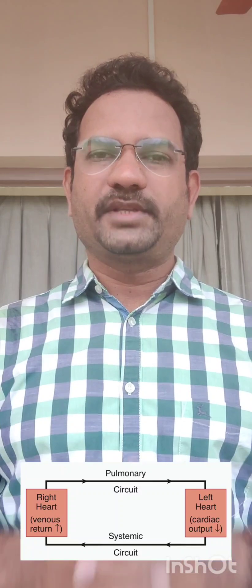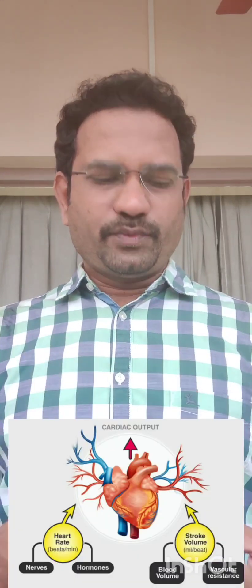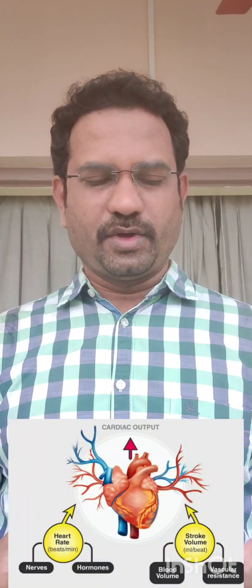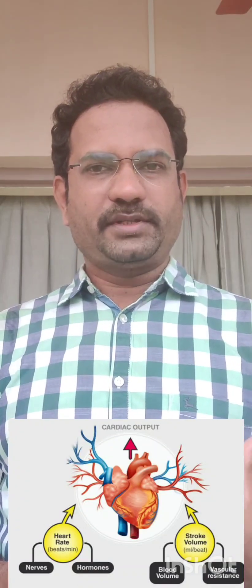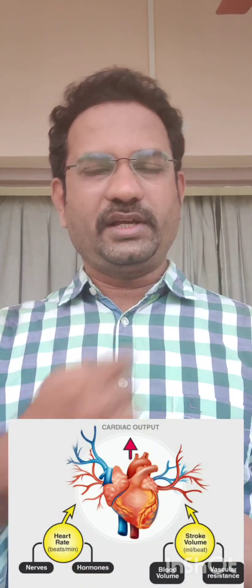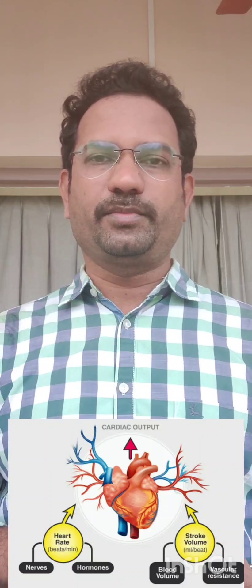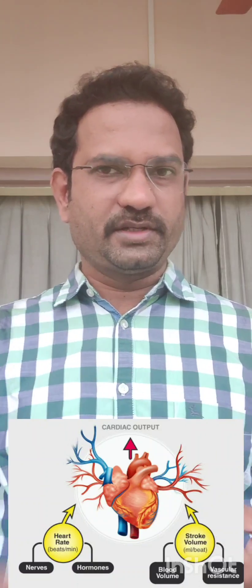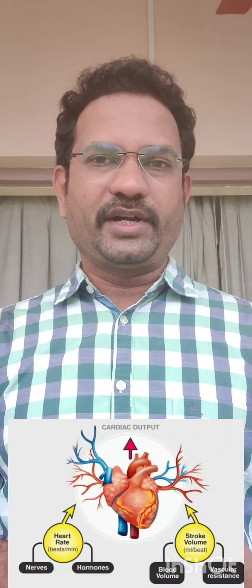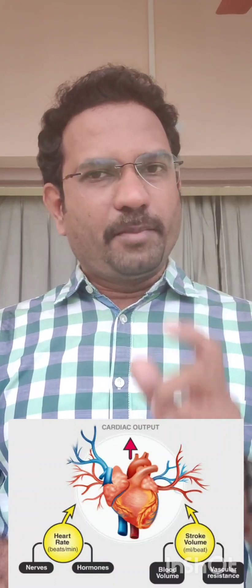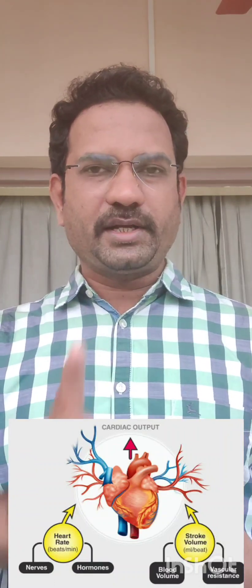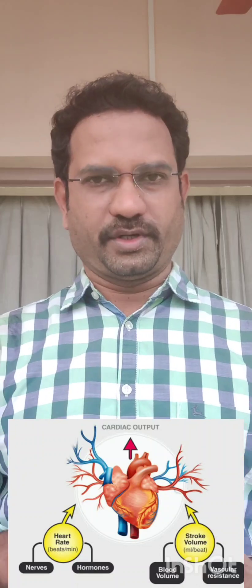Now some important terms. Cardiac output: output means what is coming out of the heart; cardiac means heart. Every minute, the heart pumps blood out. The amount of blood ejected by the left ventricle per minute is known as cardiac output.